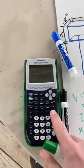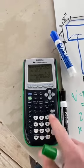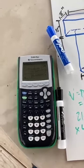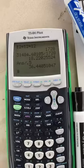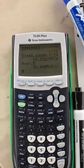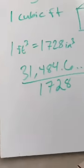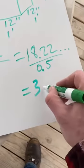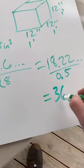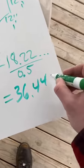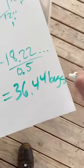So now I'm going to have my final answer divided by 0.5 or multiplied by two. And although we could have just multiplied and gotten 36 in our head from 18, I did want to have it in the calculator for a particular reason. So this means I have 36.44 bags.